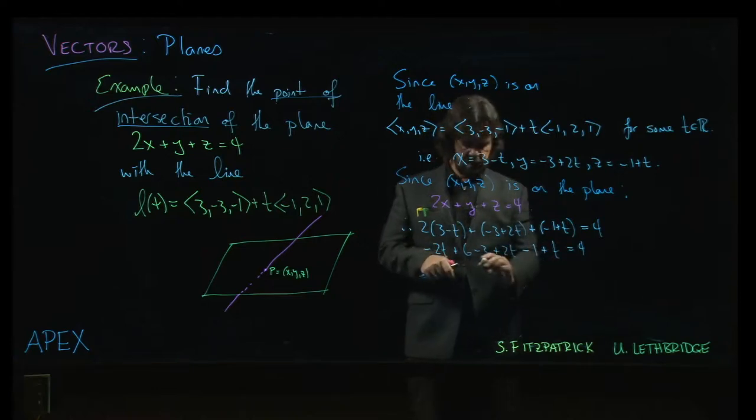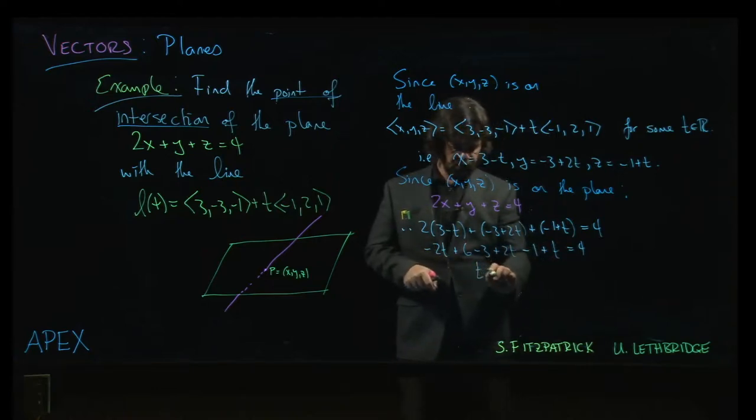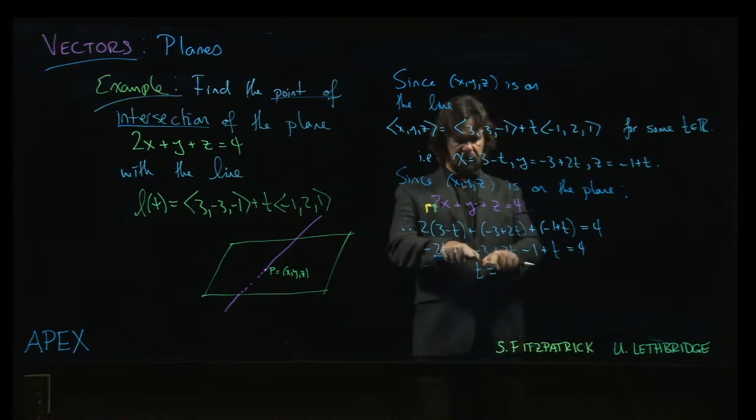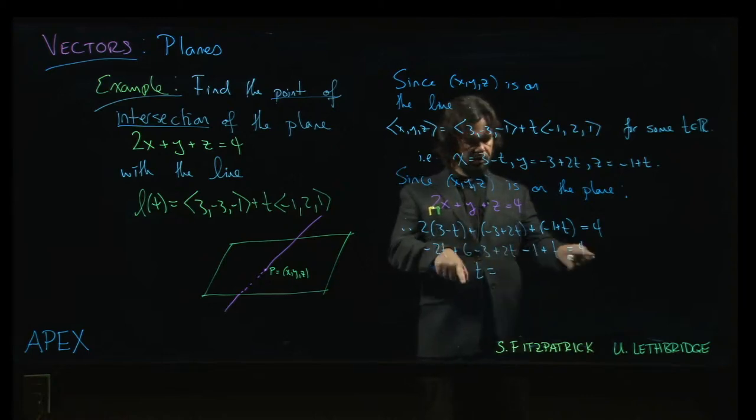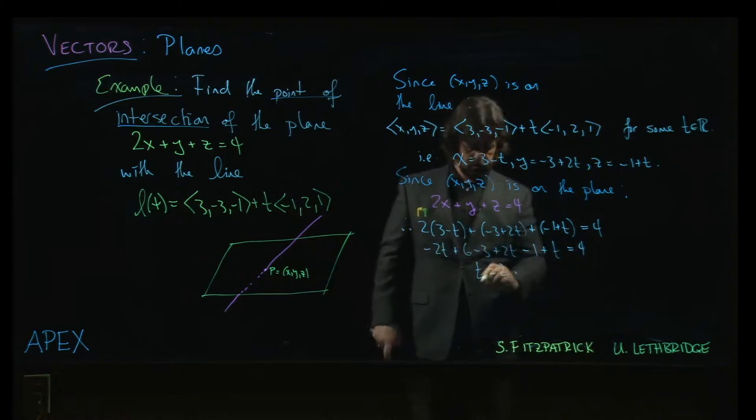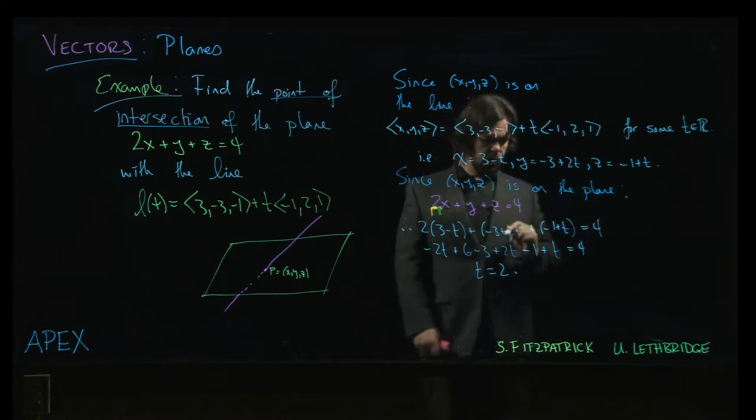So, -2t plus 2t. Well, that's nice. That cancels. We just get t. And, what do we have here? 6 minus 3 minus 1 is 2. Subtract that from the other side. t equals 2.